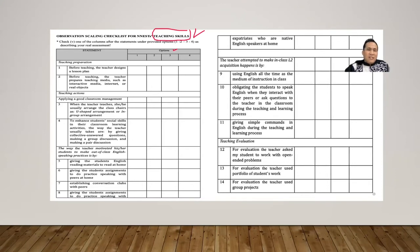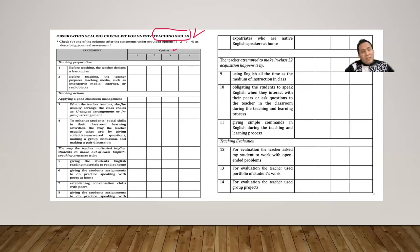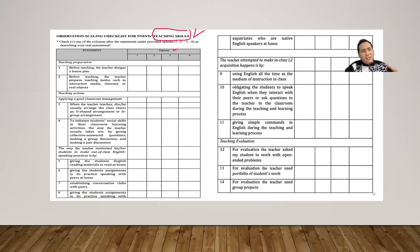To summarize: creating a questionnaire does not mean directly writing items or statements. You must follow the trajectory — first create a construct, divide it into aspects, find indicators, and finally create statements or questions for the questionnaire.